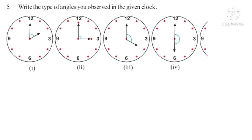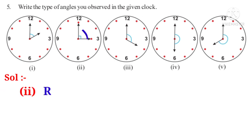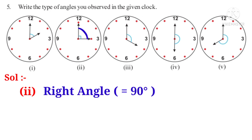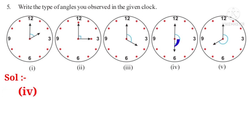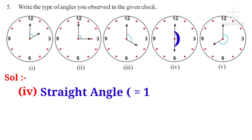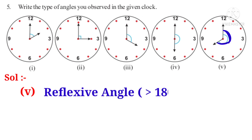Now let us do the fifth problem. Write the types of angles you observed in the given clock. Solution. In the first figure, the angle is an acute angle which is less than 90 degrees. In the second figure, the angle is in an L shape, so it is a right angle equal to 90 degrees. In the third figure, the angle is greater than 90 degrees, so it is an obtuse angle. In the fourth figure, the angle is a straight angle equal to 180 degrees. In the fifth figure, the angle is greater than 180 degrees and less than 360 degrees, so it is a reflex angle.